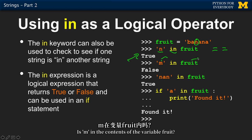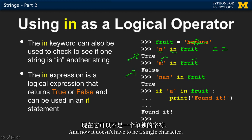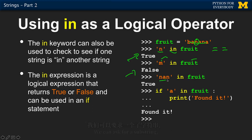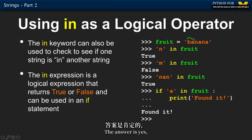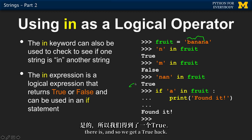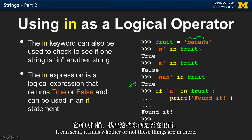Is 'm' in the contents of the variable fruit? The answer is no, so we get back false. And it doesn't have to be a single character — we can ask for a substring. Is 'nan' inside fruit? The answer is yes, so we get true back. It's pretty smart — it can scan and find whether or not these things are in there.